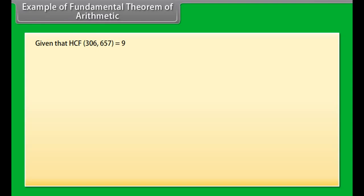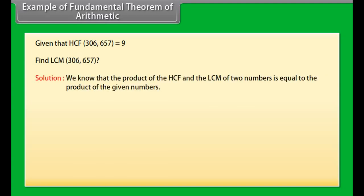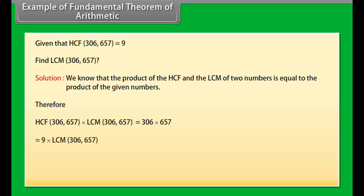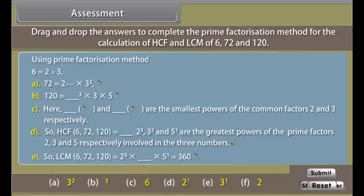Example of the Fundamental Theorem of Arithmetic: Given that HCF(306, 657) = 9, find LCM(306, 657). We know that the product of HCF and LCM of two numbers equals the product of the given numbers. Therefore 9 × LCM(306, 657) = 306 × 657, which gives LCM = 22,338.